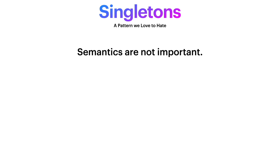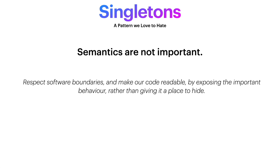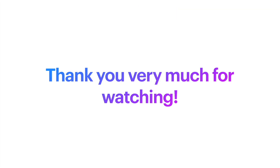As a conclusion, remember that at the end of the day the semantics are not important. What someone calls a singleton could very well be a cleverly wired graph of objects that does not serve as global state, but is controlled with a dependency injection mechanism. Our goal as software engineers and architects is to respect software boundaries and make sure that our code is readable by exposing the important behavior rather than giving it a place to hide. Thank you very much for watching, and I will see you in the next one.